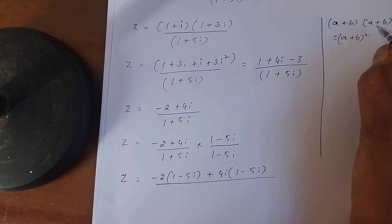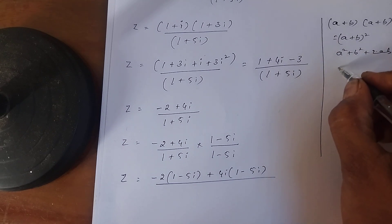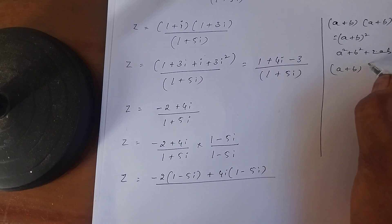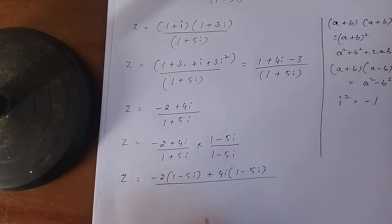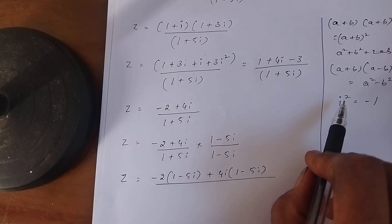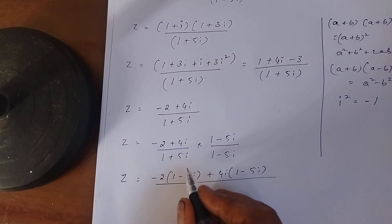A+B into A+B is (A+B)² means A²+B²+2AB. And A+B into A-B is A²-B². And i² equals -1. What we have used here? We have to substitute in place of i² as -1.